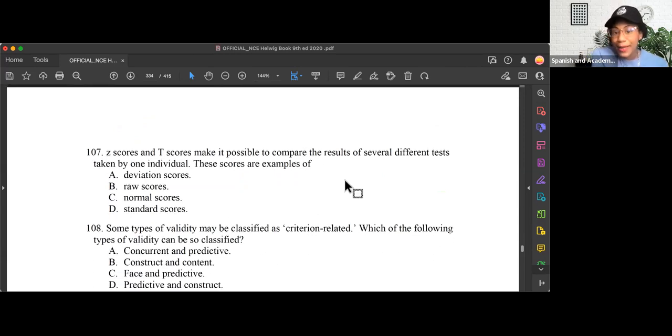Question 107. Z scores and T scores make it possible to compare the results of several different tests taken by one individual. These scores are examples of—we've said this and said it again, D, standard scores. But let's move through those. Remember, deviations is the unit we move away from the mean. Standard scores are not standard deviations. I feel like a lot of people get those confused. I am a woman who has glasses, but I am not my glasses. Z scores and T scores, which are standard scores, have deviations, but they're not the same thing as saying they are deviations. So we knock out A.